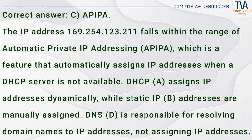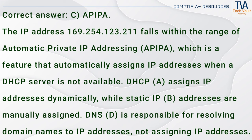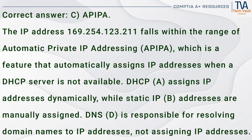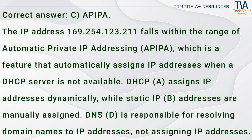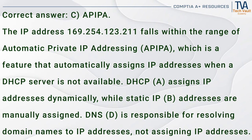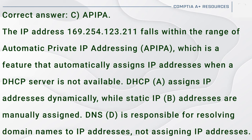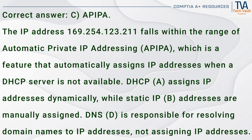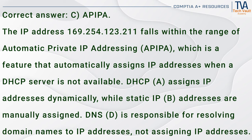Correct answer: C. APIPA. The IP address 169.254.123.211 falls within the range of Automatic Private IP Addressing (APIPA), which is a feature that automatically assigns IP addresses when a DHCP server is not available. DHCP (A) assigns IP addresses dynamically, while static IP (B) addresses are manually assigned. DNS (D) is responsible for resolving domain names to IP addresses, not assigning IP addresses.